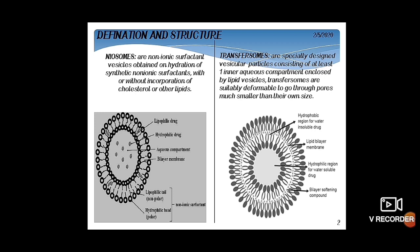Transferosomes are specially designed vesicular systems consisting of at least one inner aqueous compartment enclosed by lipid vesicles. Transferosomes are highly deformable and can pass through pores much smaller than their own size. In their structure, there is a hydrophobic region for water-insoluble drug incorporation, a hydrophilic region for water-soluble drug incorporation, and a bilayer softening compound.